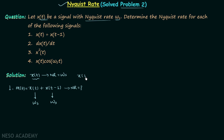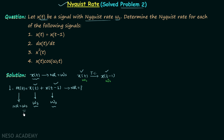When you perform time shifting and obtain the new signal x(t-1), both signals will have the same Nyquist rate. Since the message signal is the sum of x(t) and x(t-1), and both have Nyquist rate ω_s, we choose the maximum, which is ω_s. So the Nyquist rate of m(t) is ω_s. Using these properties, we can easily calculate the Nyquist rate.